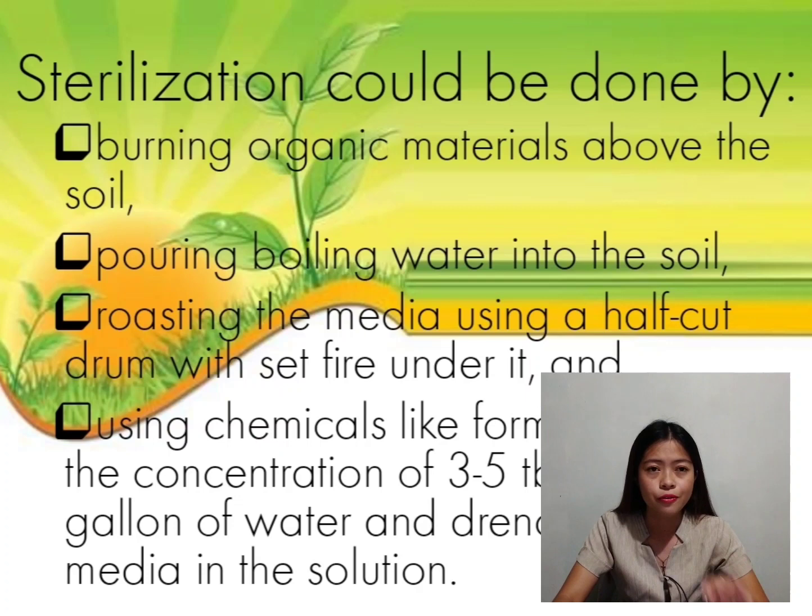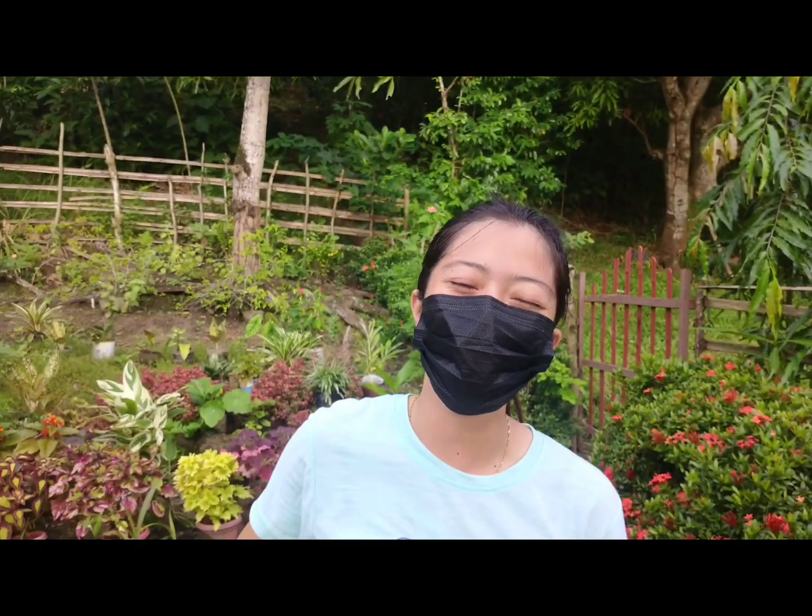The last method is using chemicals like formaldehyde at a concentration of 3 to 5 tablespoons per gallon of water, and drenching the media in the solution. We need to sterilize the soil to ensure the safety of seedlings from soil-borne diseases. Sterilizing the soil also guards seedlings from damping off, which commonly destroys young seedlings and seedbugs.